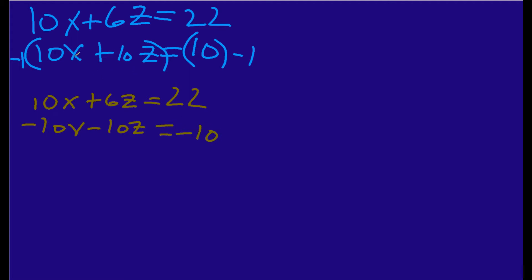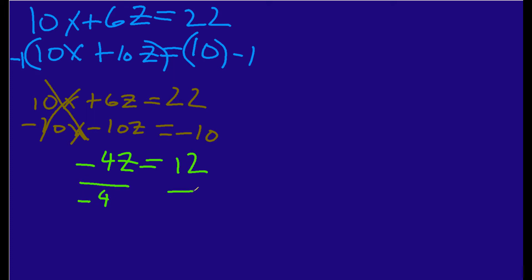The 10X terms combine and cancel — they perish, if you will. I get negative 4Z equals 12. Dividing by negative 4, we now know that Z equals negative 3. We've solved one dimension of the three dimensions.